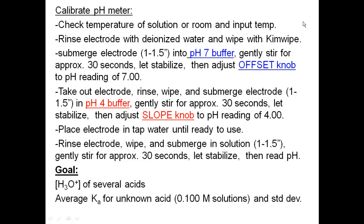So the goal of this experiment is we want the hydronium ion of the several acids that we're going to do. And then I want the average Ka for the unknown acid. That means the three 0.1 solutions and also the standard deviation of that.